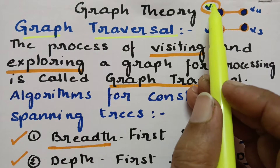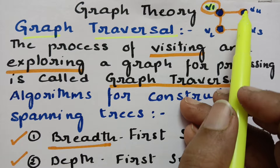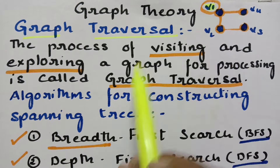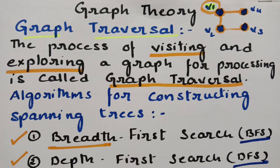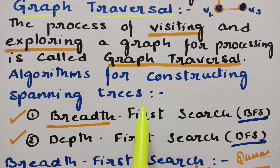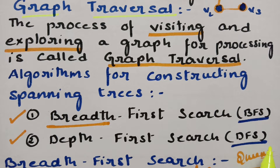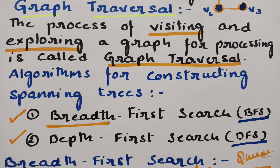Graph traversal is: first we have to visit that vertex, then we have to explore that vertex — that is graph traversal. Graph traversal is very, very important in order to learn BFS. For constructing spanning trees there are two algorithms: first is breadth first search (BFS) and depth first search (DFS). In today's video I am going to teach about the breadth first search algorithm.